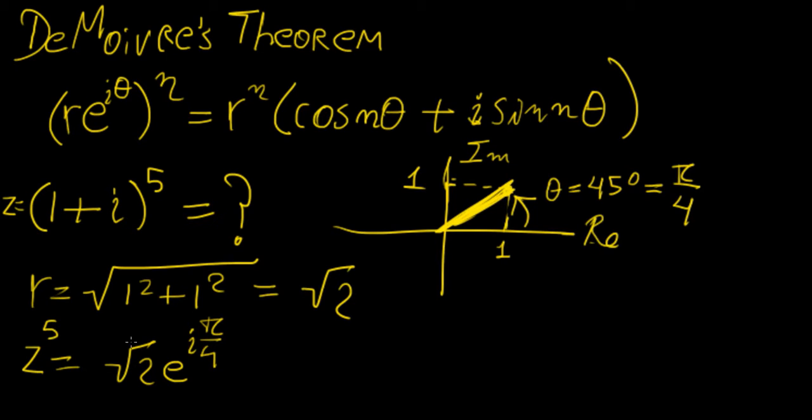So what do we do now? If we want to raise both sides to the power of 5, what we're going to end up with on this side is going to be square root of 32, so that's 2 to the power of 5 square root, and this is going to be e to the i 5 pi over 4.